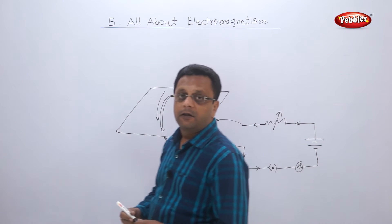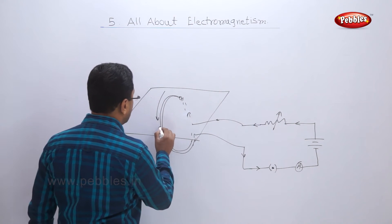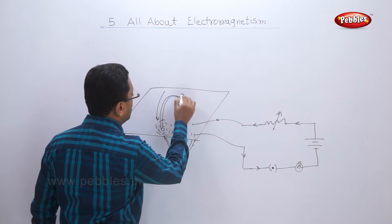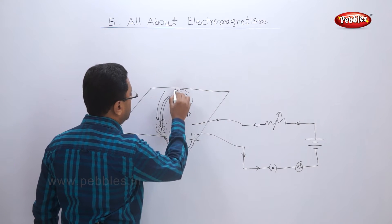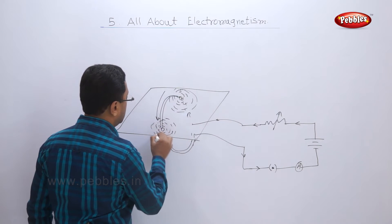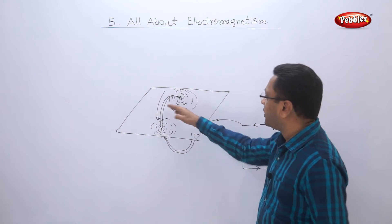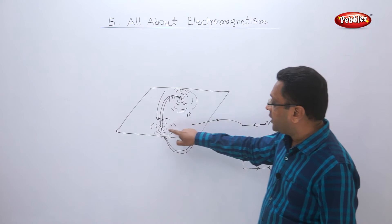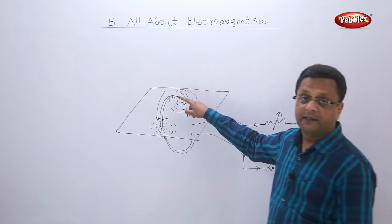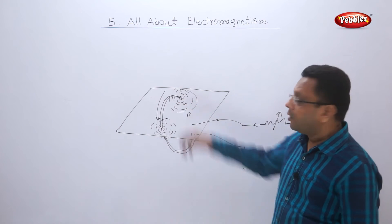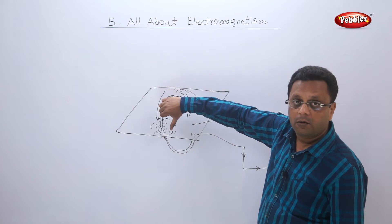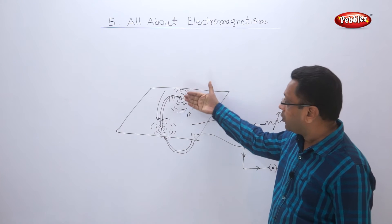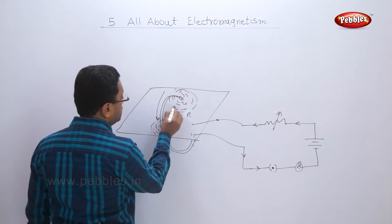Now again I sprinkle some iron filings. What you will see is two different groups of iron filings. Some iron filings are there in between also, but the magnetic field is weak there. This electromagnet is generated here and this electromagnet is generated here. Now if you apply the thumb rule — I am holding this conductor like this — the direction of the forces is like this.